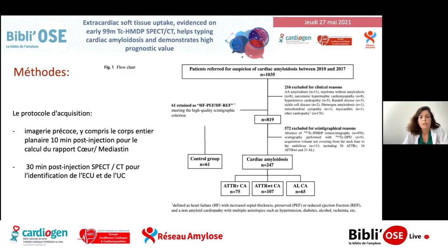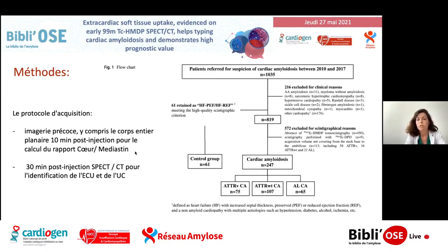La méthodologie de ce papier : ils ont recensé tous les patients qui avaient bénéficié d'une scintigraphie osseuse de 2010 à 2017, avec comme groupe contrôle les scintigraphies osseuses négatives, donc sans fixation, ayant des critères d'insuffisance cardiaque à fraction d'éjection préservée. Ils ont exclu les diagnostics différentiels de CMH sarcomérique, d'amylose AA, et les patients pour lesquels la scintigraphie avec clichés précoces était non interprétable ou absente. On arrive à une cohorte de 247 patients, avec principalement des amyloses transthyrétine sauvages (107 patients), 75 mutées et 65 AL.